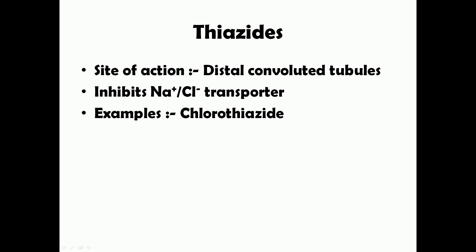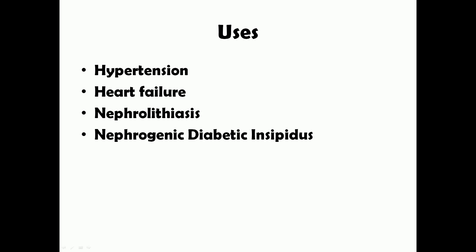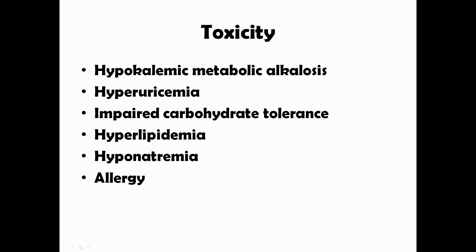Now let's look at thiazides. Their site of action is the distal convoluted tubule, where they act on and inhibit the sodium-chloride transporter. An example is chlorothiazide. Thiazides are used in hypertension, heart failure, nephrolithiasis, and the very interesting condition of nephrogenic diabetes insipidus — related to vasopressin receptors V1a, V1b, and V2.